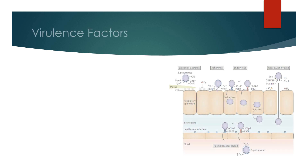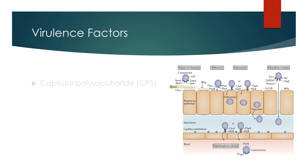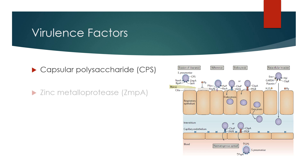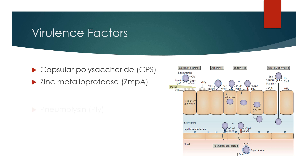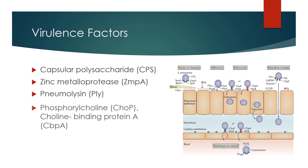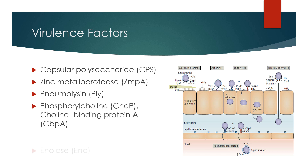Its virulence factors include: capsular polysaccharide, which prevents entrapment by mucus during colonization; zinc metalloprotease, which cleaves human immunoglobulin A1; pneumolysin, which reduces ciliary beating; and phosphorylcholine and choline-binding protein A, which are involved in binding and invasion of epithelial cells. Enolase not only binds plasminogen and facilitates tissue invasion but is also involved in NETosis.